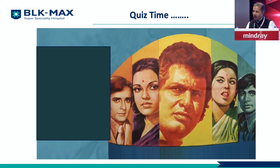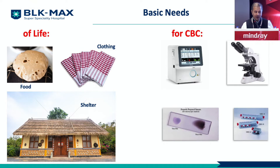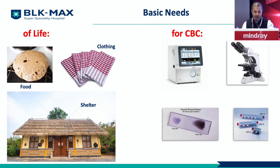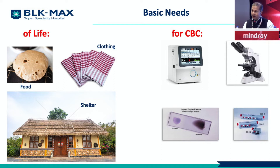Roti, kapda, aur makan — we've all known about these. In terms of hematology also, let's look at the basic needs of life: for CBC, it's a hematology analyzer, microscope, slide, and a counter. Yes or no? Then why the hell am I talking about digital morphology?